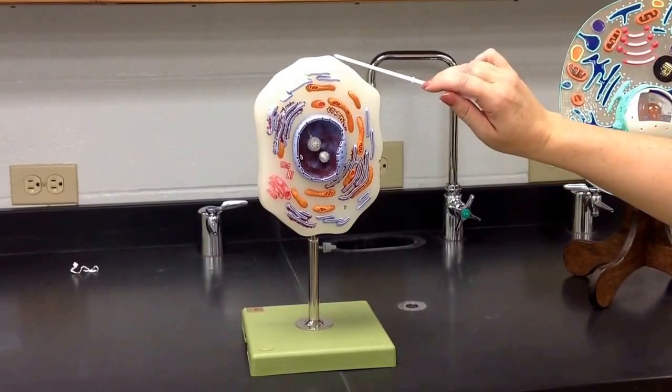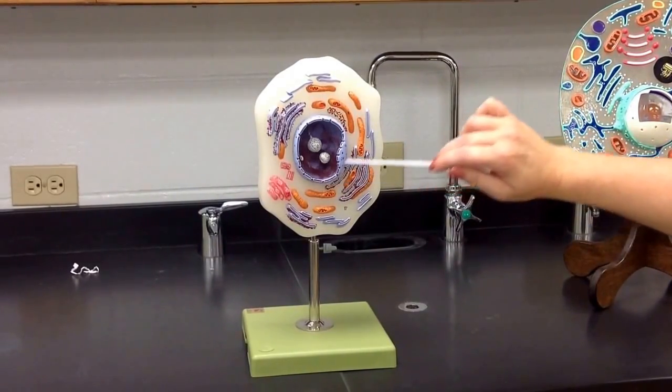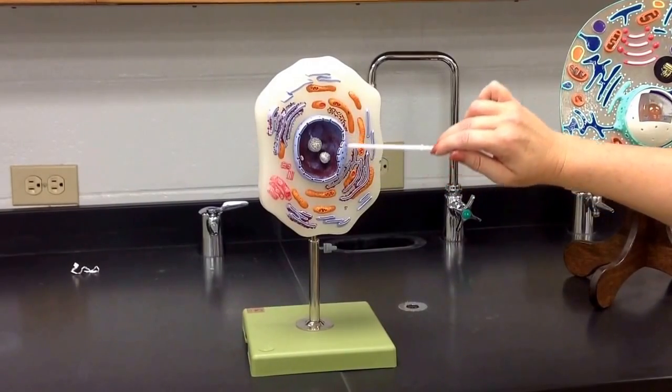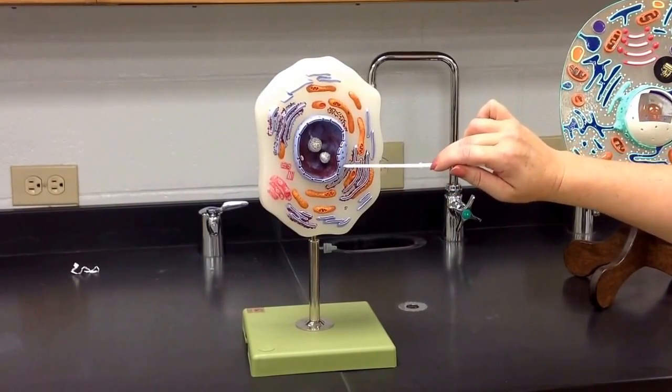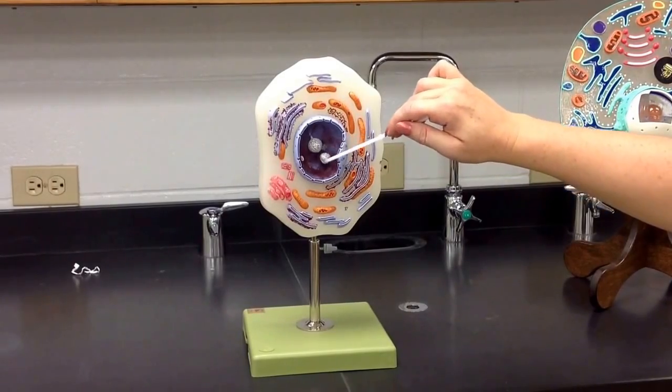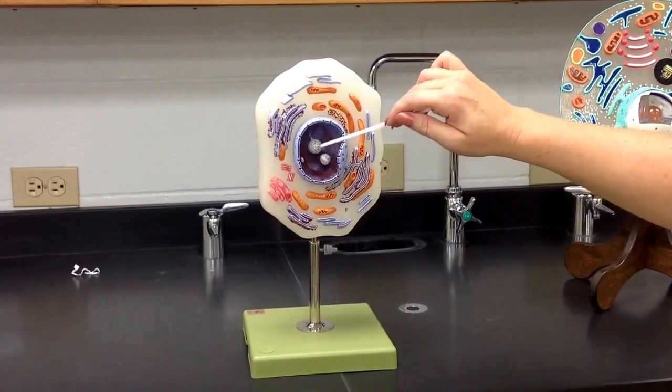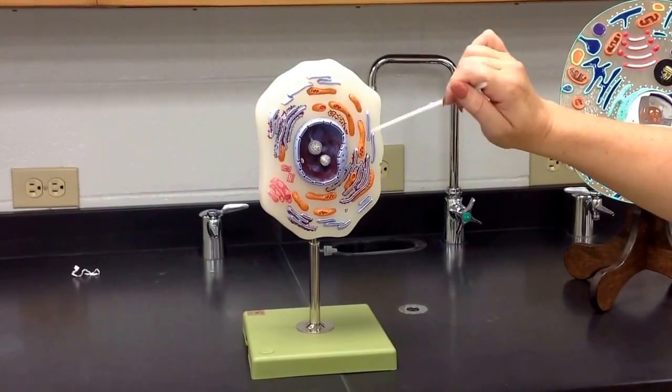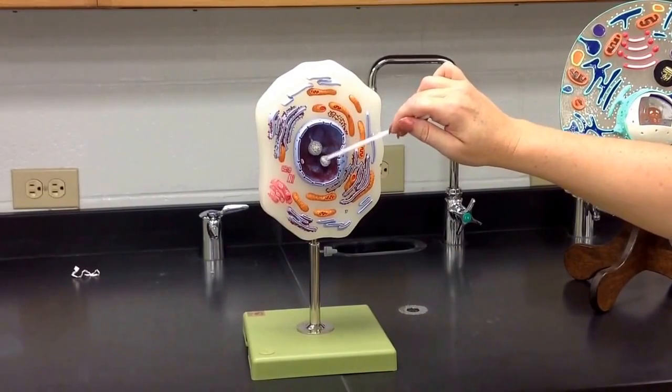So you still have your nucleus here at the center, the nuclear envelope with the nuclear pores that you see here, and inside you have the nucleoli. There are two shown on this model. There was only one nucleolus shown on the other model. This shows two nucleoli.